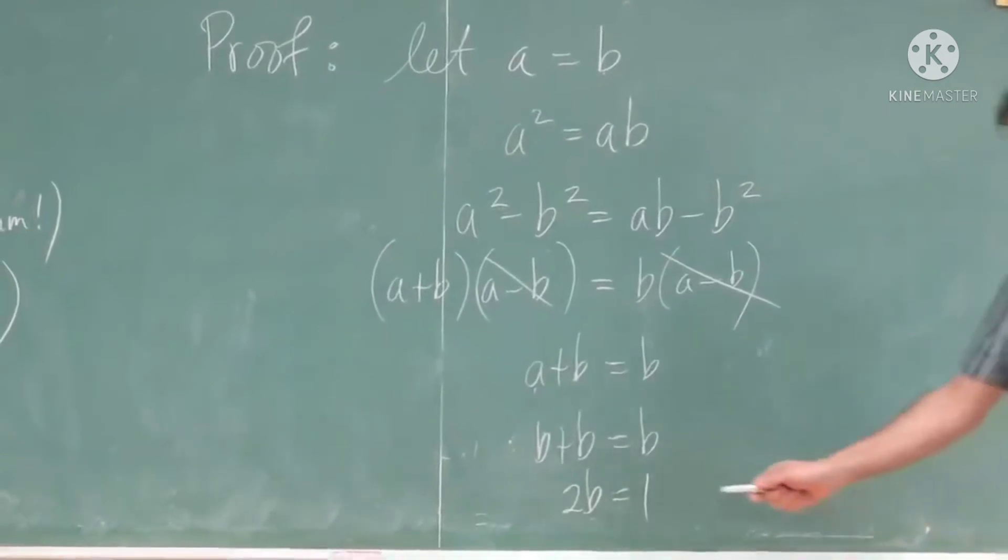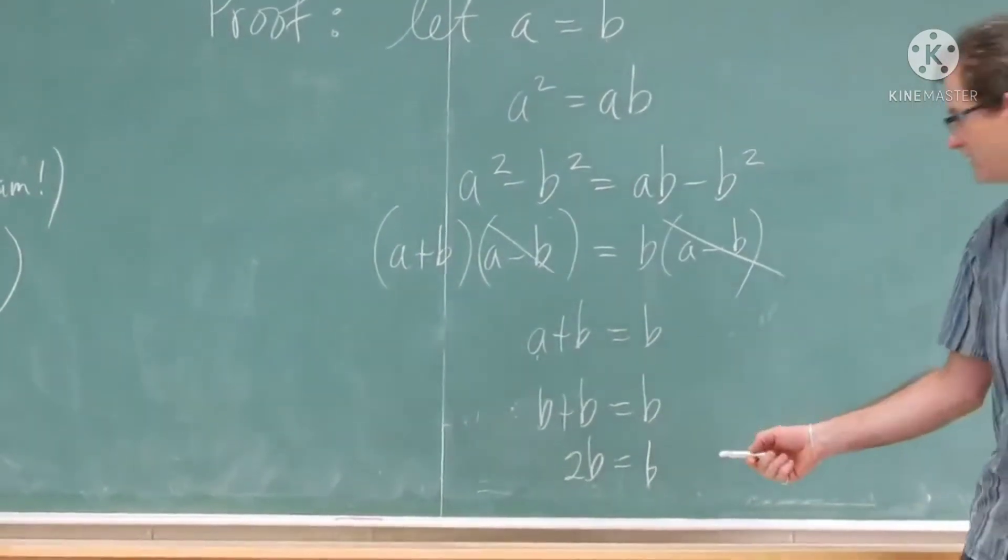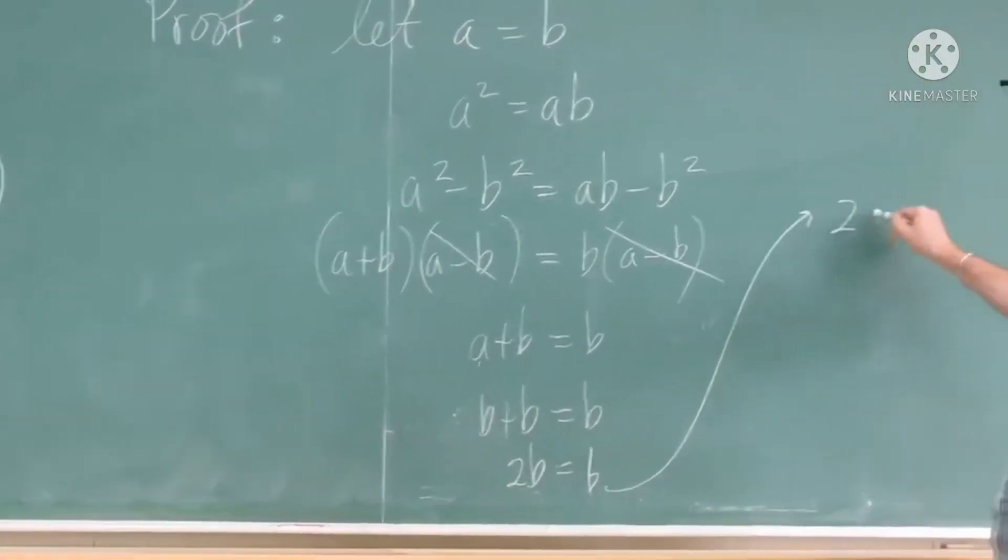2B or not 2B. This is not 2B. This is just B. Divide both sides by B. And here, 2 equals 1.